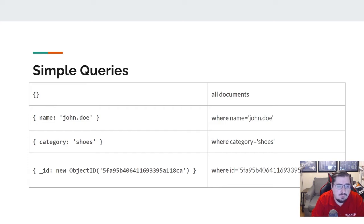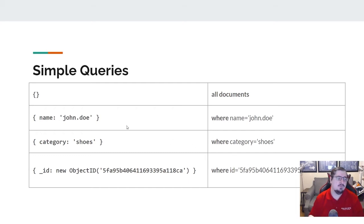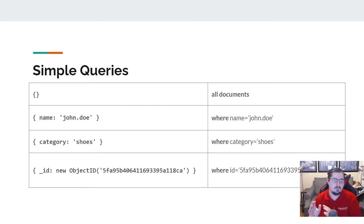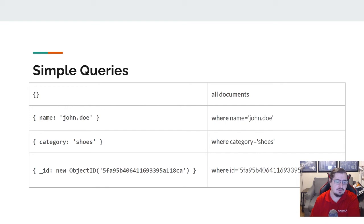If I want a simple filter, say the name is 'John Doe', I would define that in the query object. What you're seeing on the left is the filter object that you write, and what you see on the right is how you would write that same thing in SQL. You can kind of compare those two, and hopefully that will help you translate.